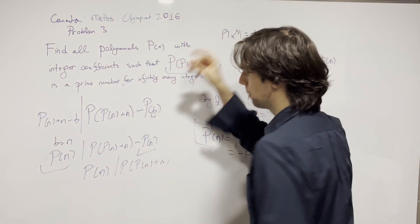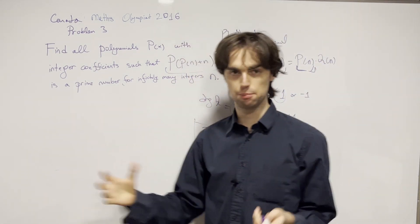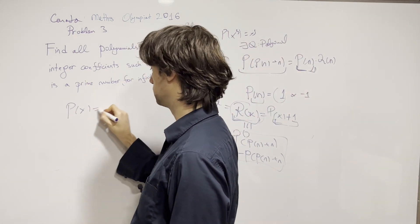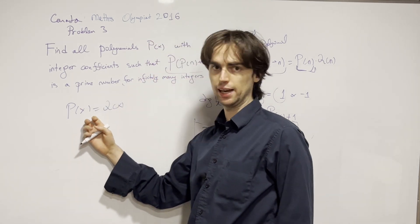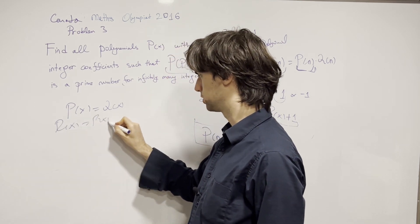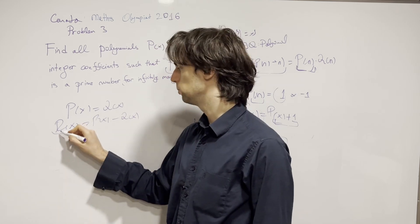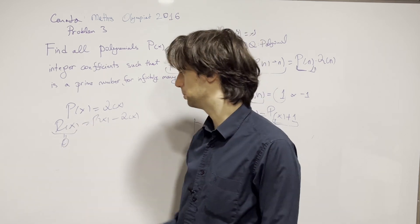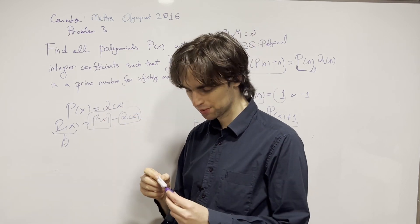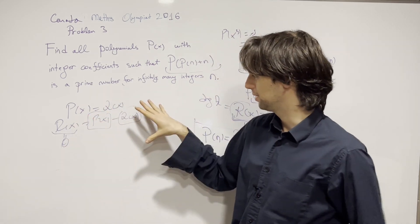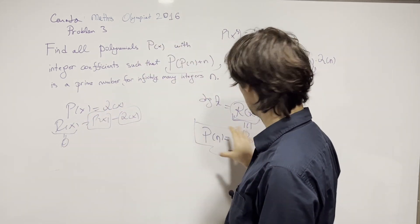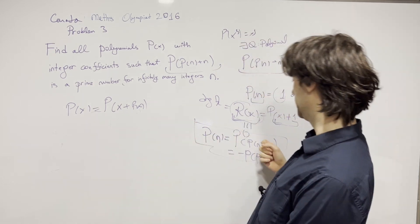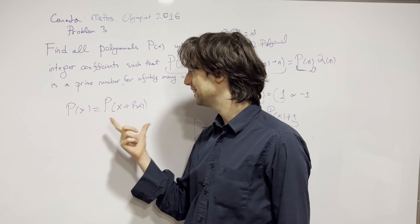Now, if two polynomials are equal infinitely many times, then they are identical. To prove this: say P(x) = Q(x) for infinitely many x. Then R(x) = P(x)−Q(x) has infinitely many zeros, which means it's the constant zero polynomial, which gives P(x) = Q(x) identically. So we have P(x) = P(P(x)+x) identically, or P(x) = −P(P(x)+x) identically.